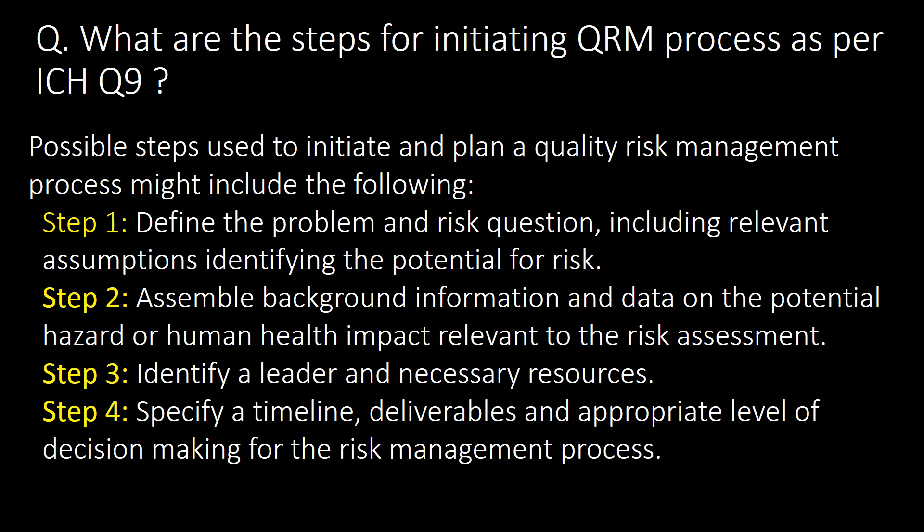What are the steps for initiating the QRM process as per ICH Q9? Step 1: define the problem and risk question, including relevant assumptions and identifying the potential for risk. Step 2: assemble background information and data on the potential hazard or human health impact relevant to the risk assessment. Step 3: identify a leader and necessary resources. Step 4: specify a timeline, deliverables, and appropriate level of decision making for the risk management process.